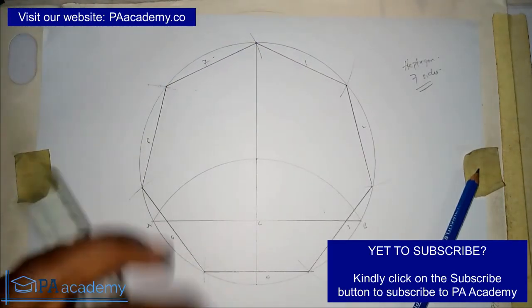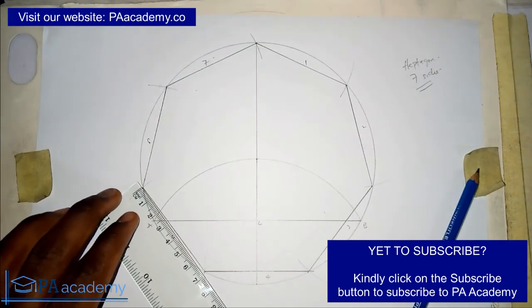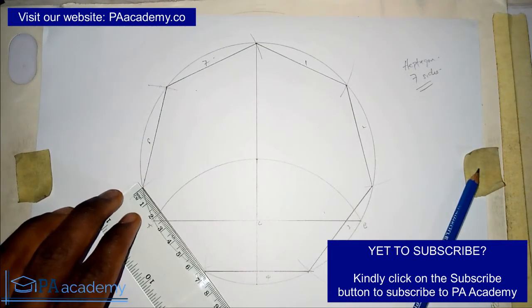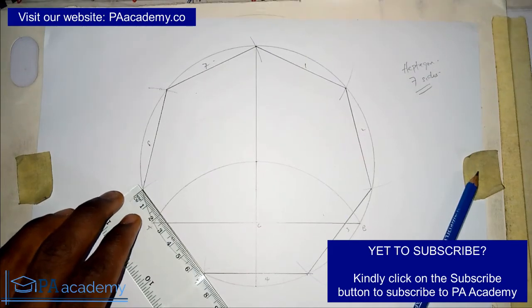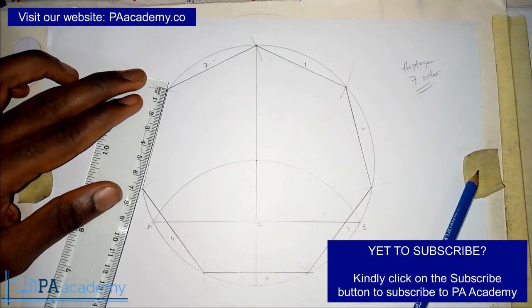You can also use your ruler to check it. This is giving us about 6.7, so if you measure it around you are going to be having the same result. This is how you go about to draw it.